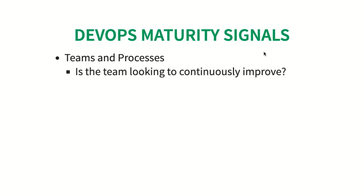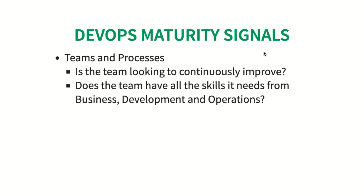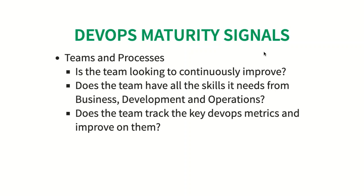The next set of signals are from the perspectives of teams and processes. Is the team looking to continuously improve? This is a very important signal showing enthusiasm to continuously innovate. Does the team have all the requisite skills — business skills, development skills, and operations skills — or at least representation from business and operations teams? Does the team track key DevOps metrics and improve upon them?